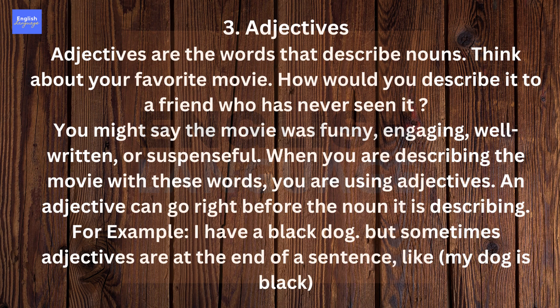Number 3. Adjectives. Adjectives are the words that describe nouns. Think about your favorite movie. How would you describe it to a friend who has never seen it? You might say the movie was funny, engaging, well-written, or suspenseful. When you are describing the movie with these words, you are using adjectives. An adjective can go right before the noun it is describing. For example, 'I have a black dog.' But sometimes adjectives are at the end of a sentence, like 'My dog is black.'